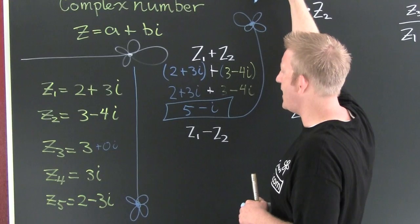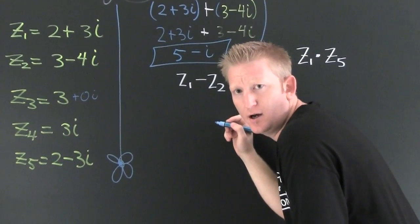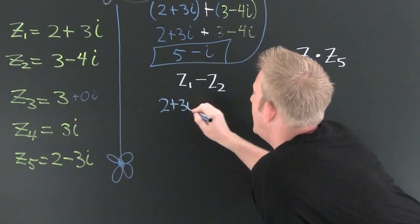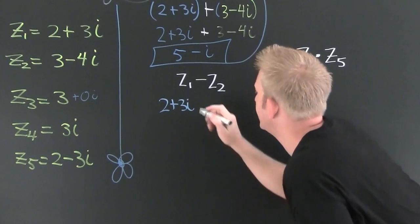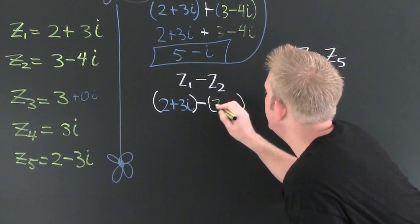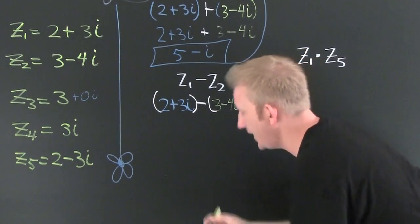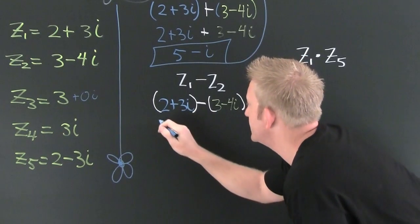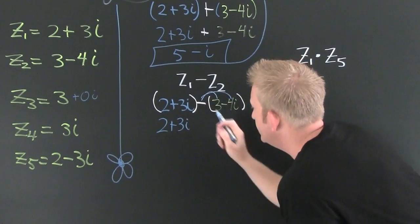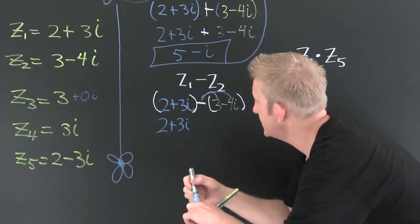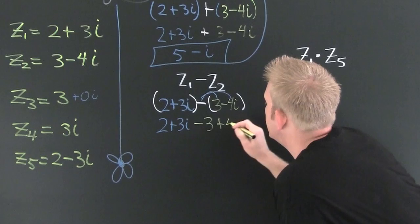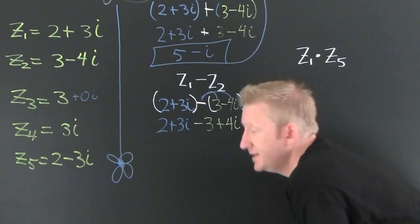Now down to subtraction. Here I'm going to take z1, which is 2 plus 3i, and I'm going to subtract z2, which was 3 minus 4i. Here these parentheses are unnecessary. This is 2 plus 3i. These are necessary because it had the minus sign on the outside. It's going to change the sign of everything on the inside. It becomes minus 3 and plus 4i.